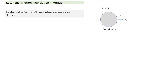Let's understand translation. Suppose you have a disc or any round shape — it could be a solid sphere, spherical shell, cylinder, disc, or hollow sphere. If an object is translating, the angular velocity is zero, meaning any line drawn on the object does not change orientation. In pure translation, every particle on the object has the same velocity and acceleration as the center of mass.